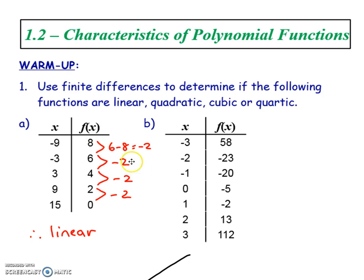So 4 minus 6 gives you negative 2 and so on. This has all of the first differences the same, that means it's linear. First differences represent an x to the power of 1 graph, which is linear.